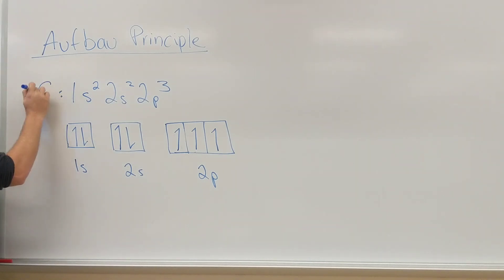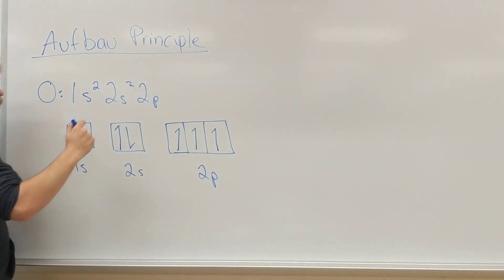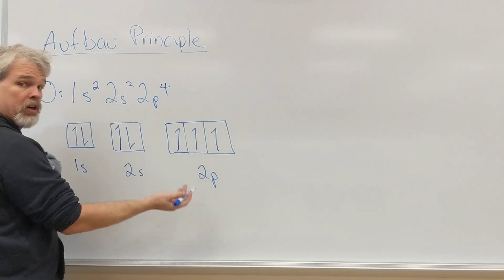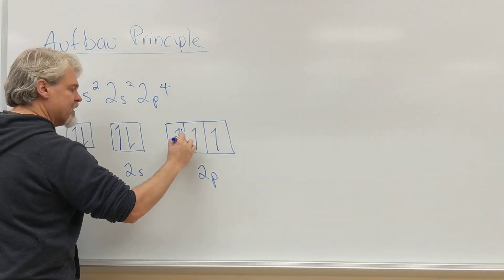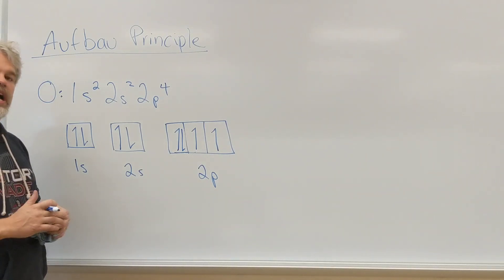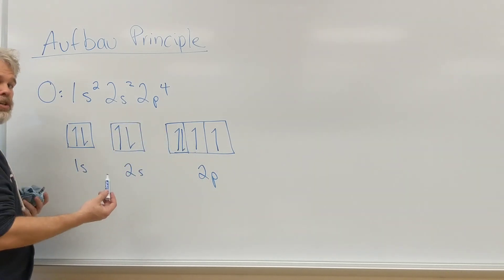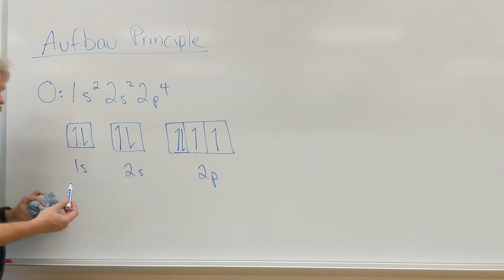And so we're going to add one more electron to get to 2p4. Now we don't have any space to put another up arrow so that means it's going to go as a down arrow. So this is how we can apply the Aufbau principle and draw both the electron configurations and the orbital block diagrams that we need to do in order to correctly represent the electron configurations of all the atoms on the periodic table.